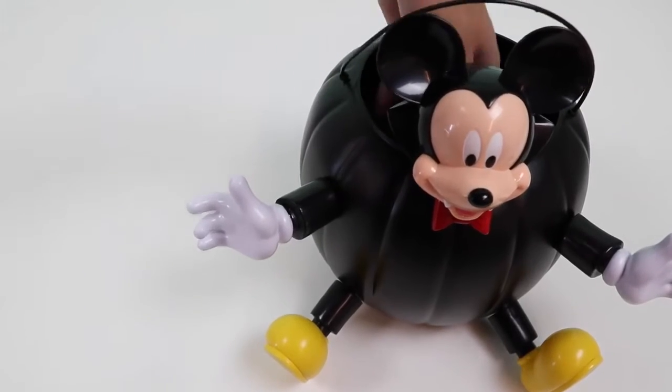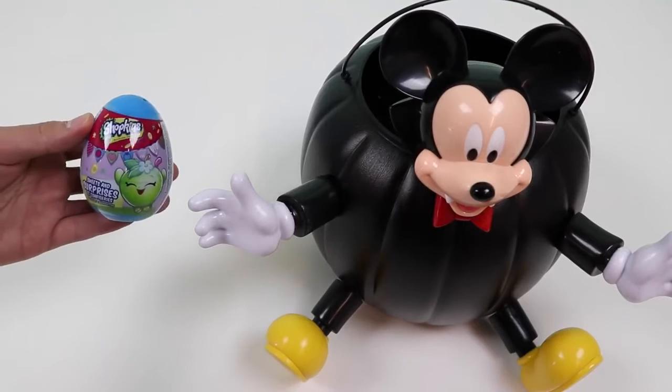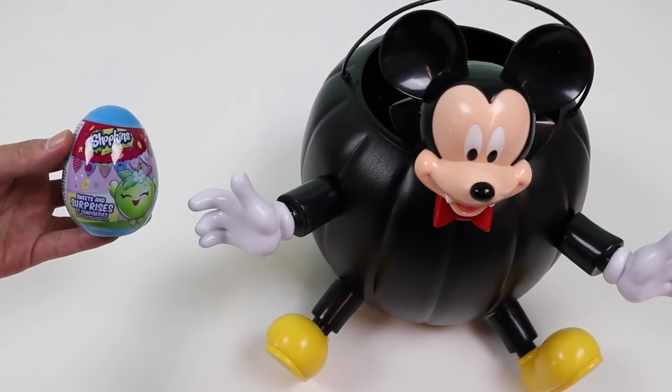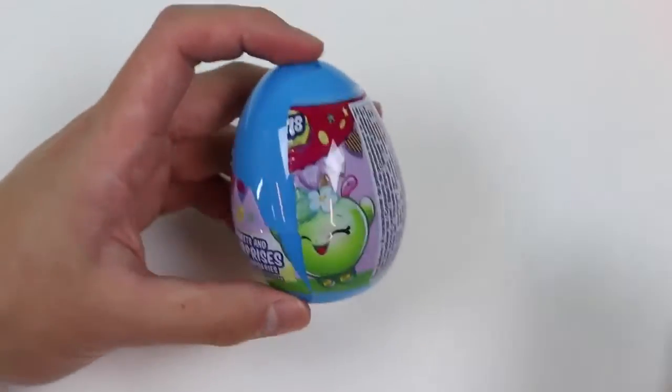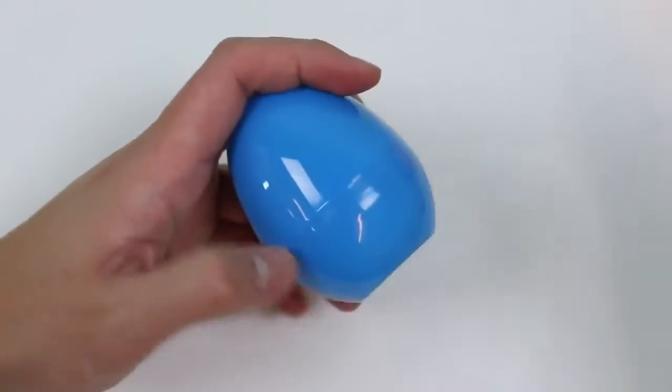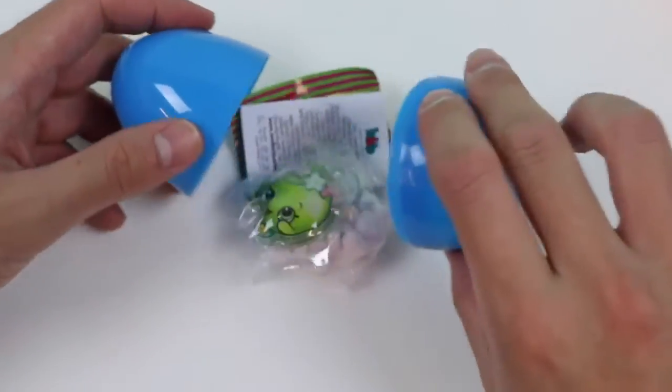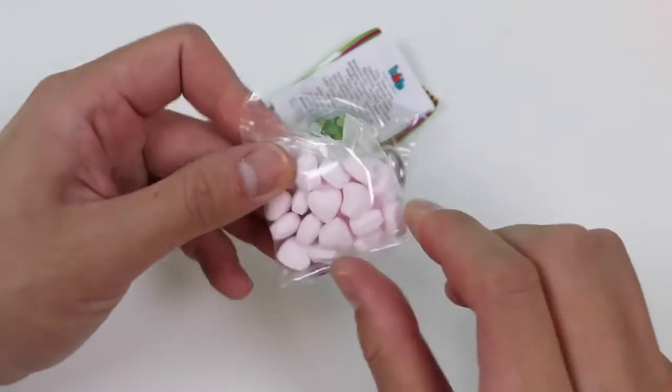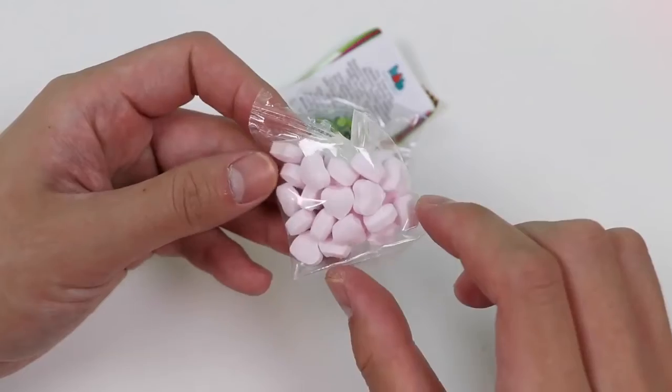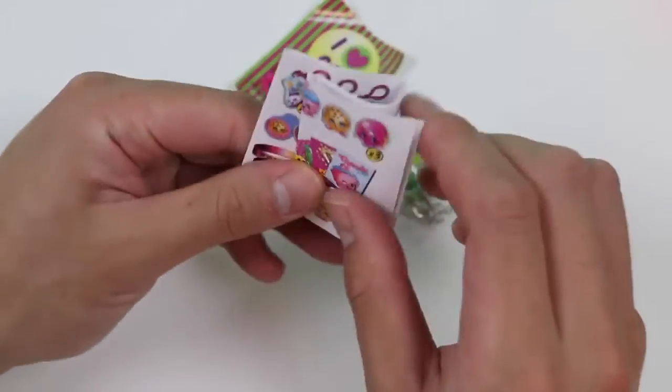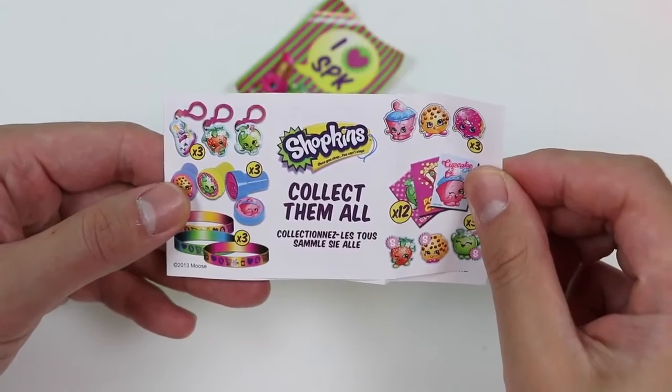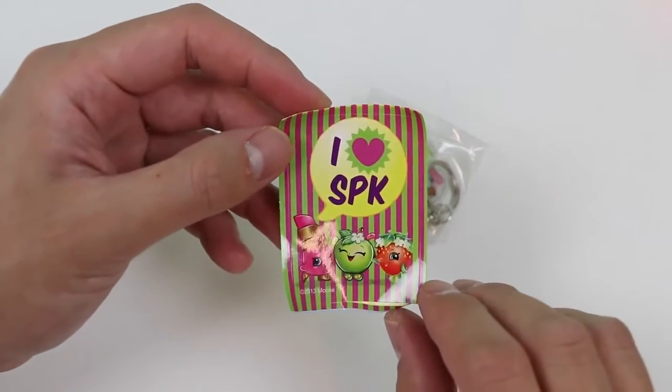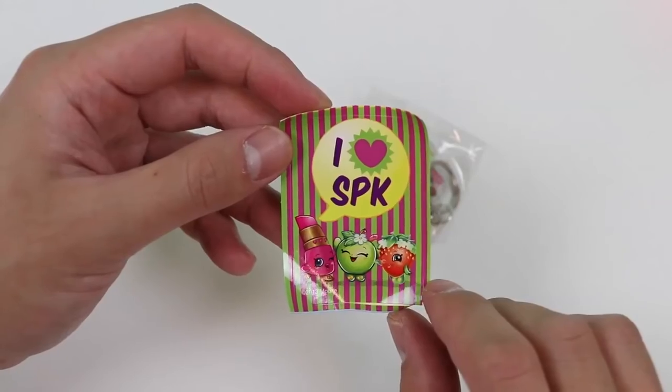We're finding some really interesting characters today! Oh! But now it's time to find a cute one! We got a Shopkins surprise egg! Here's some star shaped candy! Here's a little flyer with all the items we can collect! A sticker that says I Heart SPK! Assuming that stands for Shopkins!